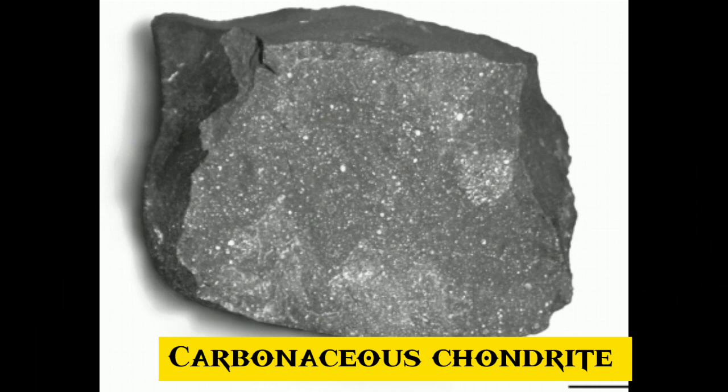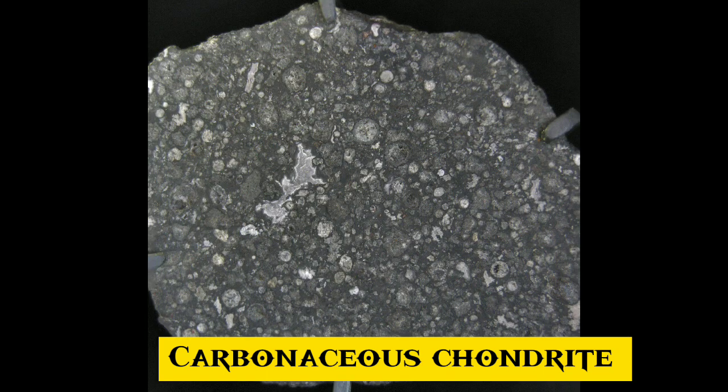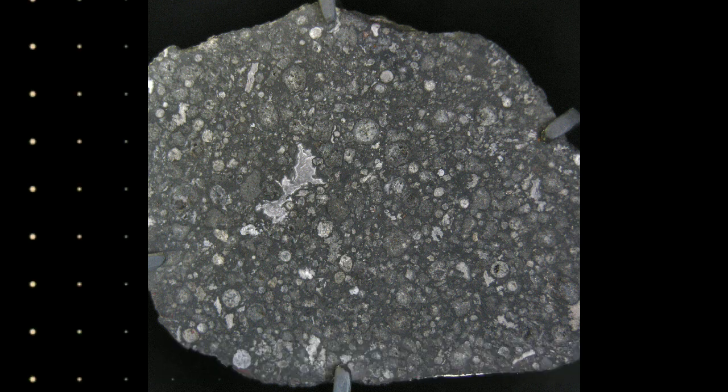6. Carbonaceous chondrites, or C chondrites, are a class of chondritic meteorites comprising at least eight known groups and many ungrouped meteorites. They include some of the most primitive known meteorites. C chondrites represent only a small proportion of meteorite falls.